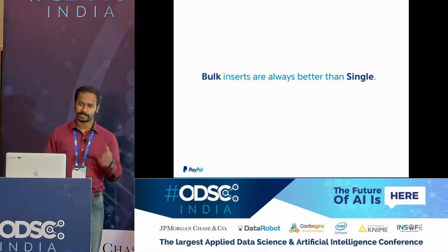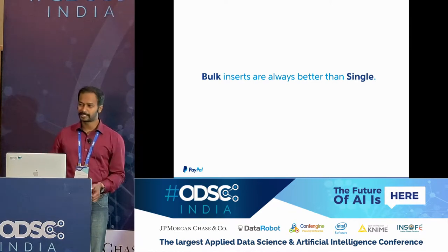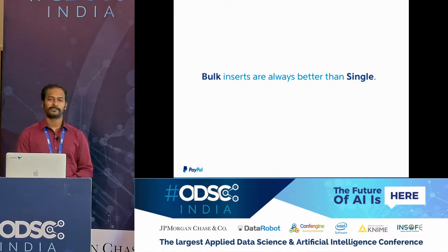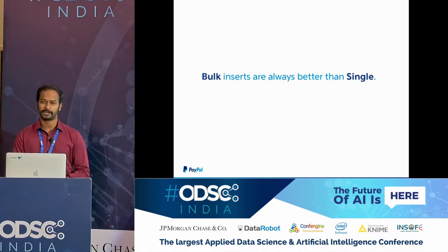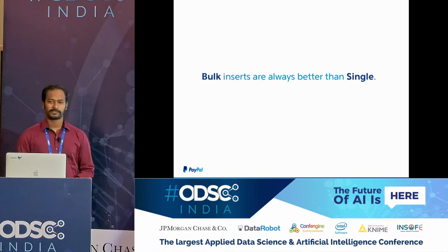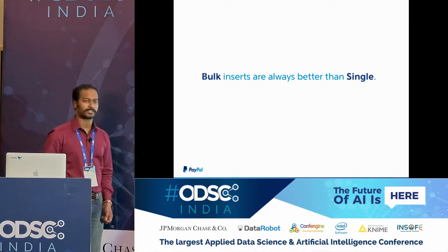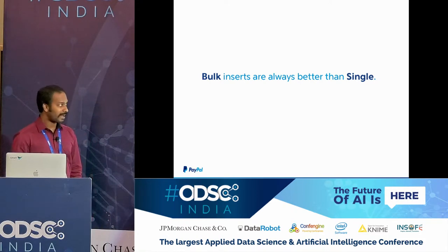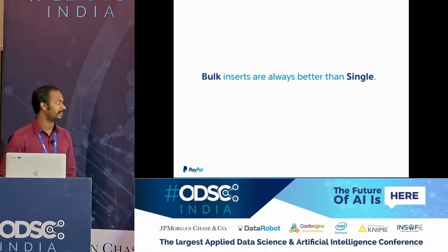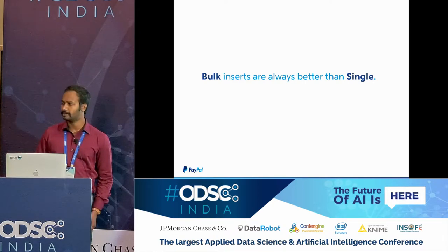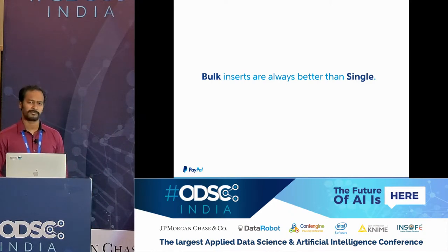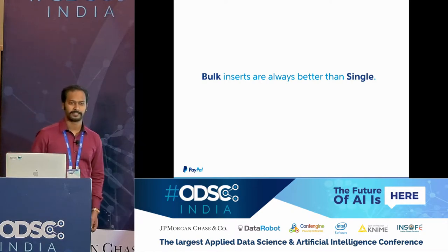If you insert documents as a bulk request instead of multiple single requests, it is always better. When we started, we did single inserts — every request had only one record — and it was awfully slow: only about 5,000 records per second, which doesn't scale. After switching to bulk inserts, we saw a 10x performance improvement — from 5,000 to 45,000 records per second without any Elasticsearch tuning. With further tuning, we now scale to 200,000 per second, though the cluster is large.